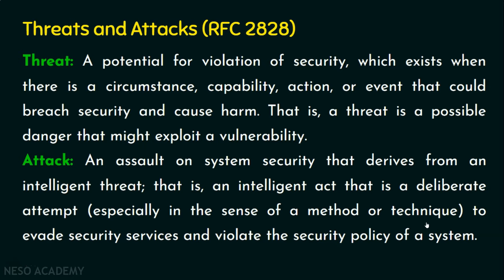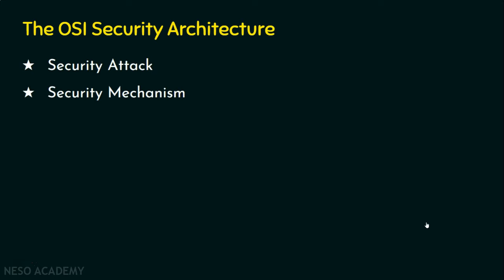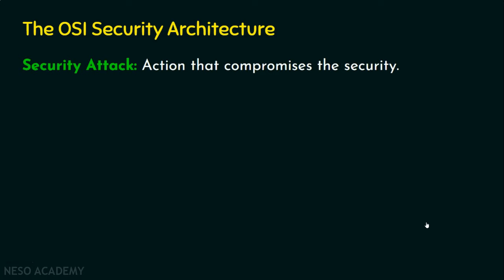Let's now dive into the topic of the day: the OSI security architecture. The OSI security architecture deals with three things: number one, the security attack; number two, the security mechanism; and number three, the security services. We will talk about each one elaborately in coming lectures. A security attack is any action that compromises the security of a system — for example, someone stealing your information, sniffing your conversation, gaining unauthorized access, or preventing a server from functioning properly.